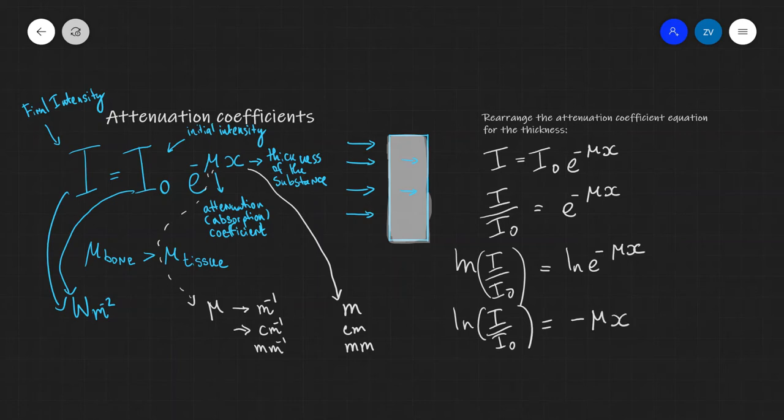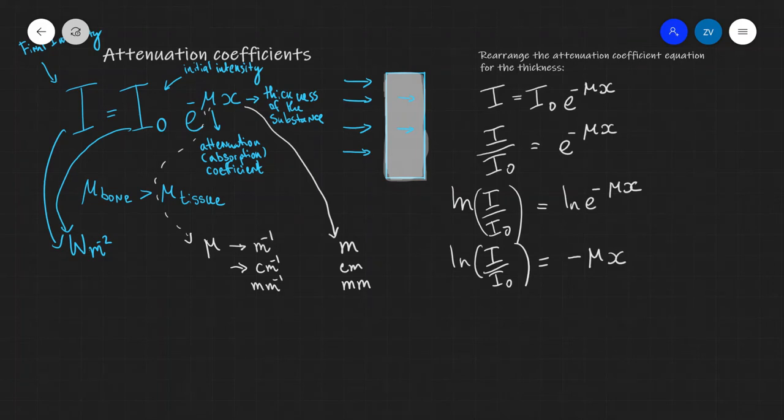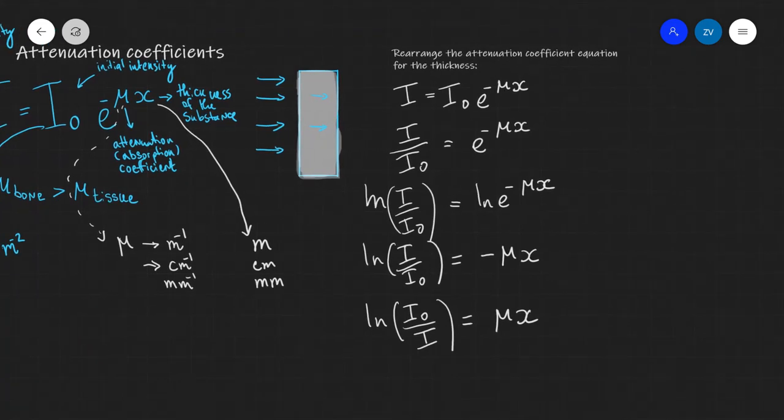Now what we're going to do then is just multiply both sides of the equation by minus one. Remember the logarithms by the rules of log addition and subtraction, they're actually going to flip. So what we're going to do is multiply everything by minus one. So I'm going to turn this side of the logarithm as I₀/I and this will be equal to μx. And our final step will be to simply rearrange for x. So x will be equal to ln(I₀/I) divided by the absorption coefficient μ.